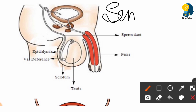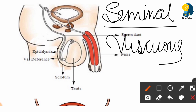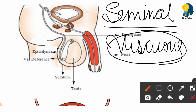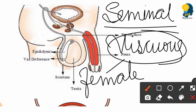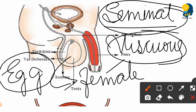The next gland is the seminal vesicle. It produces a viscous, jelly-like fluid. This viscous fluid helps in sperm mobility, especially inside the female body. When sperms are released in the vagina, they have to travel to the fallopian tube to meet the egg. The viscous fluid secreted by the seminal vesicle helps the sperms travel through the female reproductive tract.